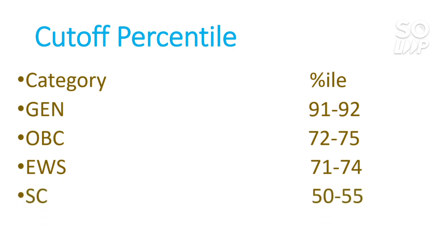For SC it is 50 to 55 percentile, and for ST it is 40 to 45 percentile. One important clarification: if you get this percentile in the February attempt, don't worry — your best score across both attempts will be considered for cutoff clearance. So even if you score less in one attempt, your better attempt will count.